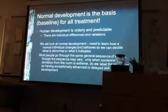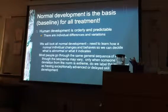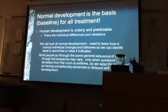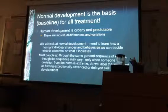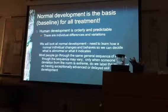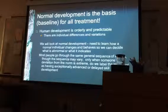Human development is orderly and predictable, though there are individual differences and variations. We look at normal development to learn how a normal individual changes and behaves so we can decide what is abnormal or what it indicates. Most people go through the same general sequences of events, though the sequence may vary. Only when someone's deviation from the norm is extreme do we label the individual as having an exceptionally advanced or delayed skill development.